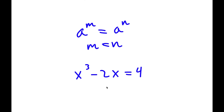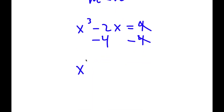To solve this, I'm going to start by subtracting 4 on both sides — these two cancel out — and I have x to the power of 3 minus 2x minus 4 is equal to 0.